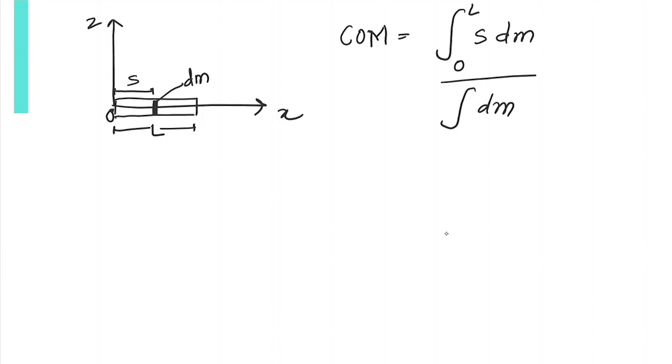We know this small mass element has width ds. Since λ is the linear mass density, we multiply it by the length element, so dm = λ·ds. We just have to put this expression for lambda.